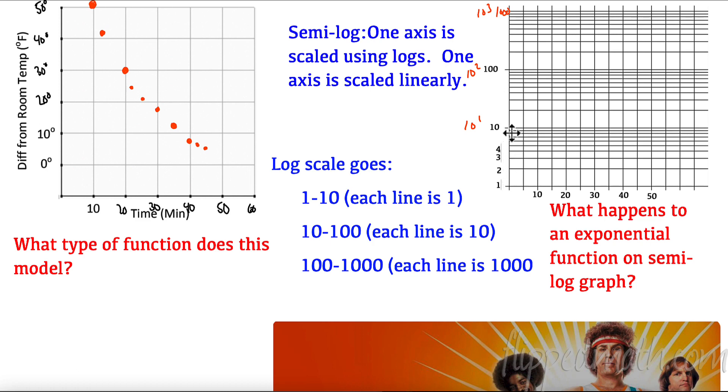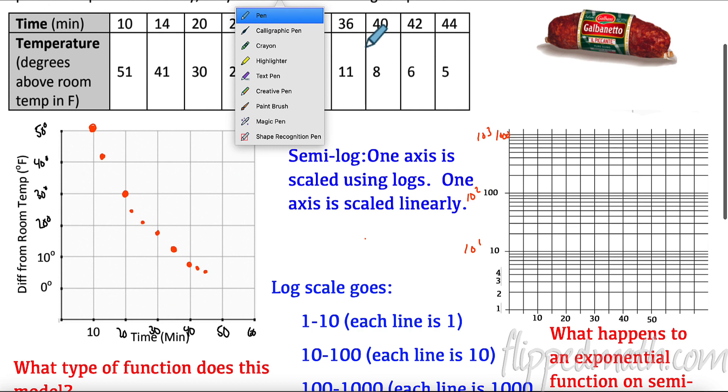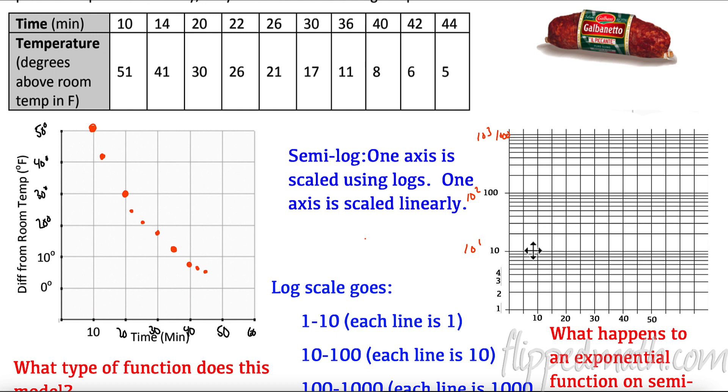All right, and we don't start at zero here. Each line goes up. The first hand, they go up by one: one, two, three, four, five, six, seven, eight, nine, ten. Then between 10 and 100 they go up by 10: 10, 20, 30, 40, 50, 60, 70, 80, 90, 100. Between 100 and 1000 they go up by 100. So let's see what happens when we plot it on here. My first point was 10 and 51, so 10 over and then 51 up, so remember this is 10, 20, 30, 40, 50 right here.